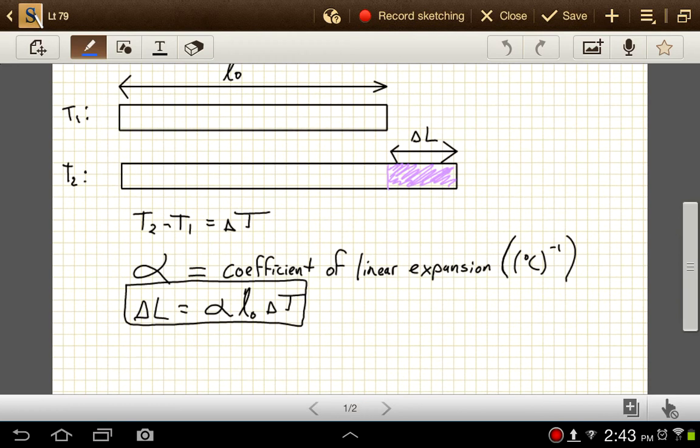Now, if T2 were colder than T1, then delta T would be a negative number, delta L would be negative also. So this whole object would, instead of expanding, it would contract, it would get smaller. And our delta L would be in the other direction here.